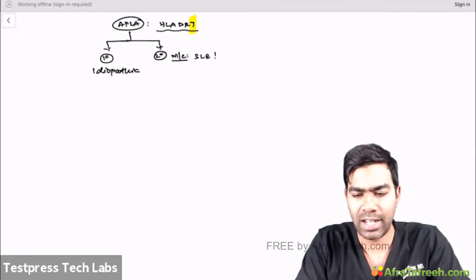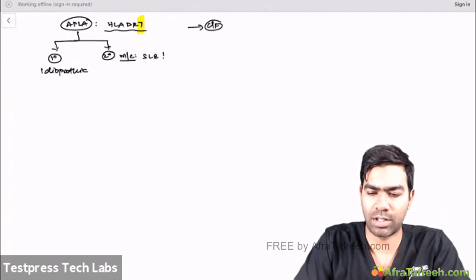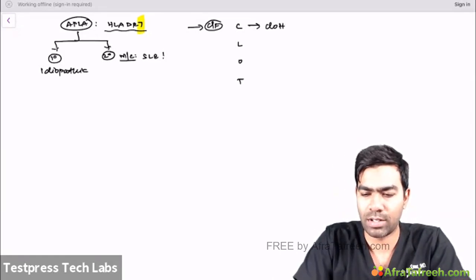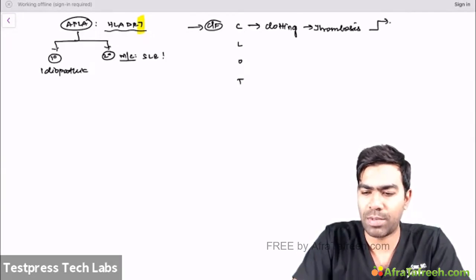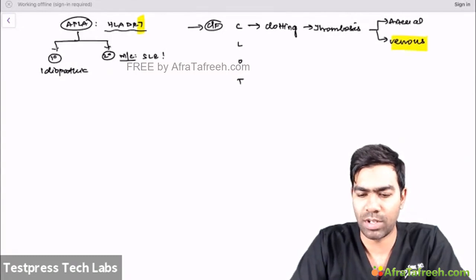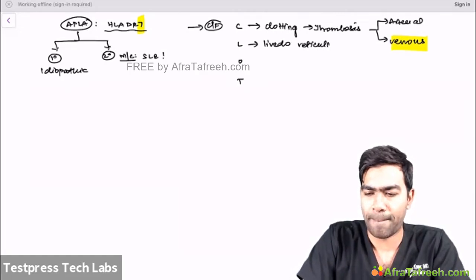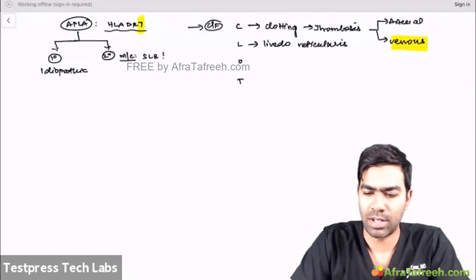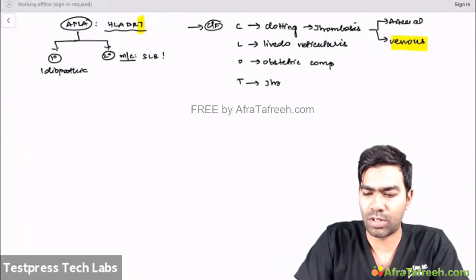The clinical features of APLA can be remembered with the mnemonic CLOT. C stands for clotting — thrombotic manifestations, which can occur in arterial as well as venous zones, though venous thrombosis is more common. L stands for livedo reticularis, caused by thrombosis of small venules. O stands for obstetric complications, particularly recurrent pregnancy loss. T stands for thrombocytopenia.